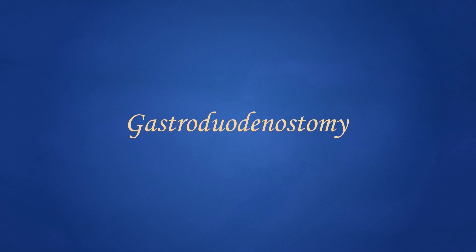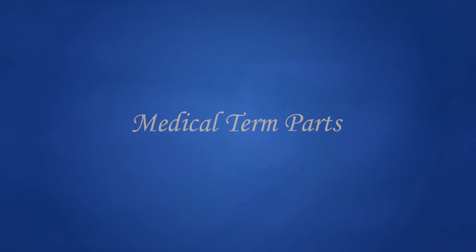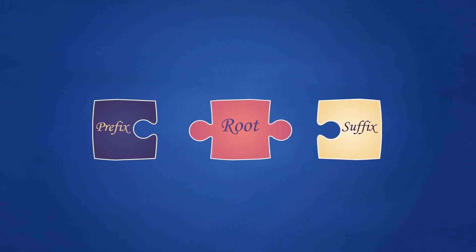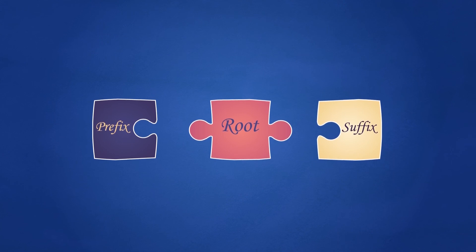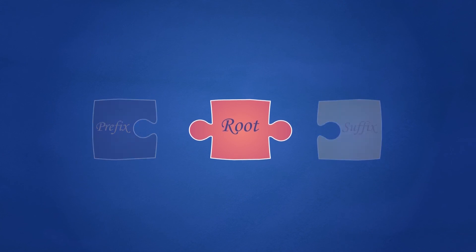This word might seem complex, but by splitting it into its components, it will be more familiar — and this is what we are going to learn in this lesson. Medical terms are made up of three word elements: prefixes, roots, and suffixes. But not all terms have all three parts. Let's talk about each component in detail, and begin with roots.